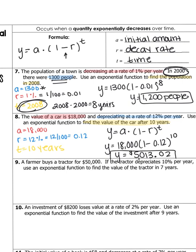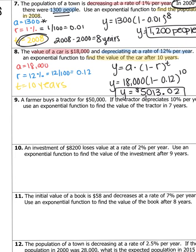That car went from $18,000 to a $5,000 car in 10 years! Go ahead and try number 9 on your own: a farmer buys a tractor for $50,000 and it depreciates 10% per year — use an exponential decay function to find the value of the tractor in 7 years. List your A value, your r, and your t, then plug them into the exponential decay formula.